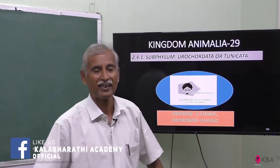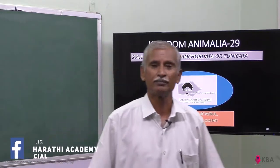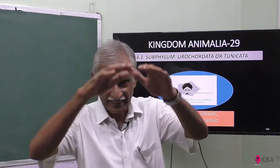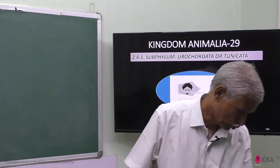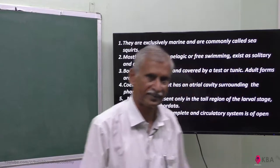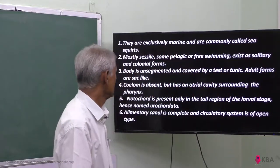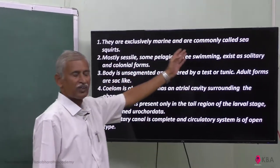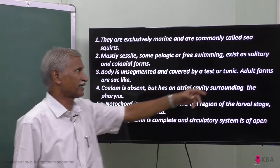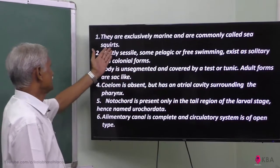Tunicata means tunic. The body is covered by a tunic. Let us see what are all the characters. First point: it is all marine. Commonly called as sea squirts.